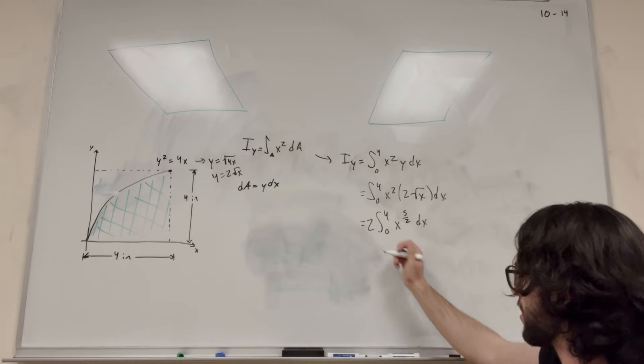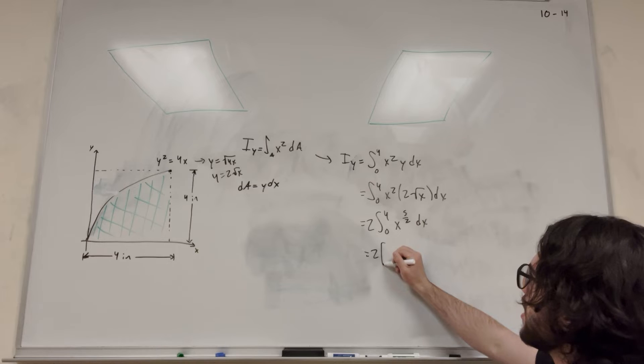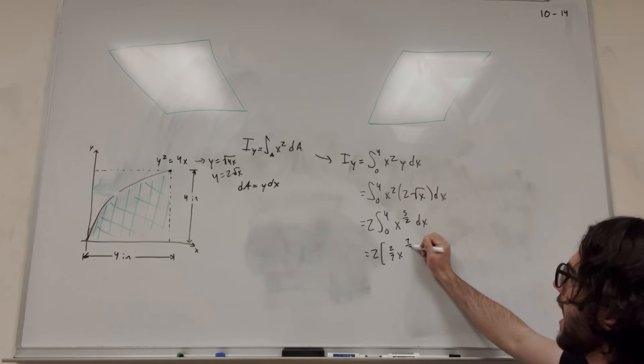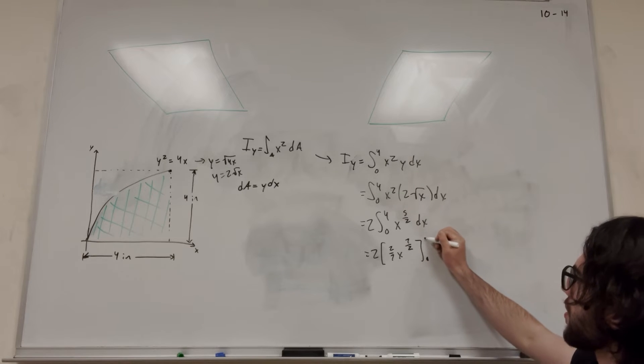So now we just have to solve this integral, pretty easy. So it's going to be 2. This is going to become 2 over 7 times x to the 7 halves on the bounds from 0 to 4.